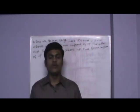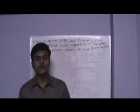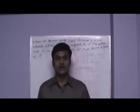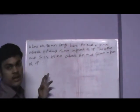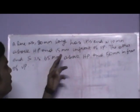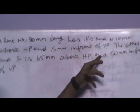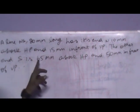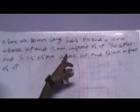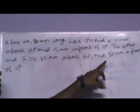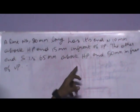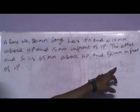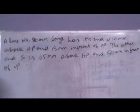Hello. Now we are going to see projection of lines. I am having an example. It is given that a line NS of 80mm long has its end N, 10mm above HP and 15mm in front of VP. The other end S is 65mm above HP and 50mm in front of VP.